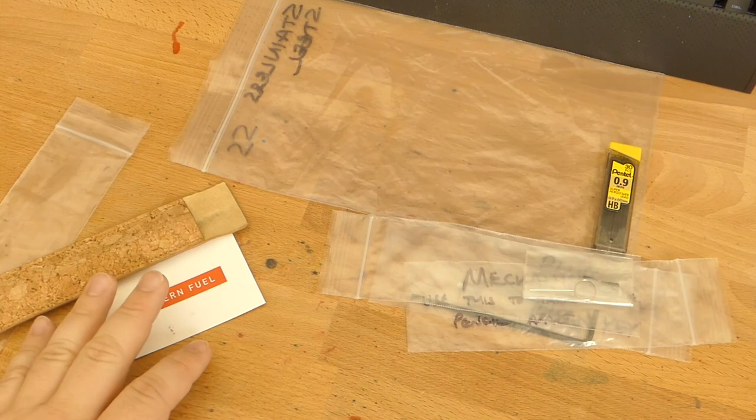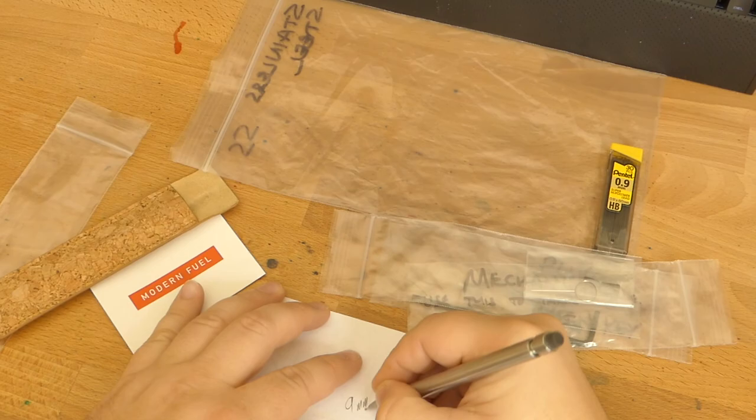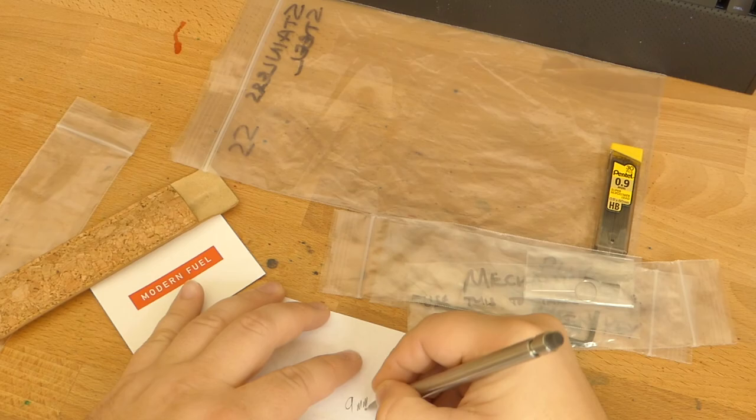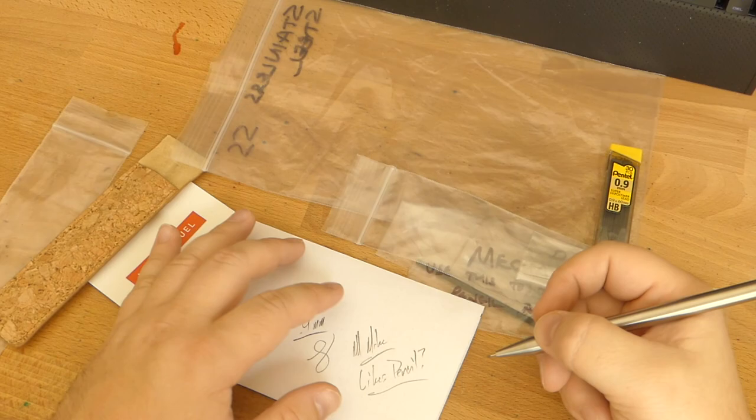Let me grab a piece of paper right here. Try out this 0.9 millimeter. Actually, this could make me a pencil liker. Don't throw stones yet. But yeah, it's big and fat and dark. I could kind of get behind this lead, I think, actually. So anyway, you'll be seeing more of this in the future, I think.